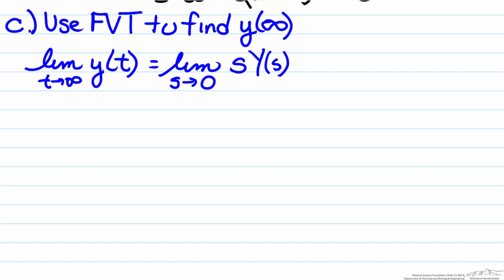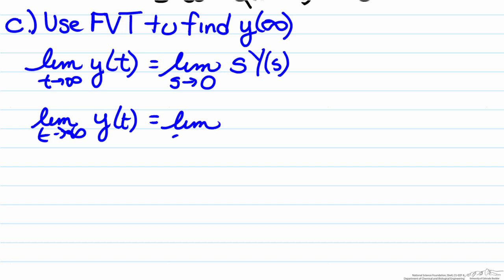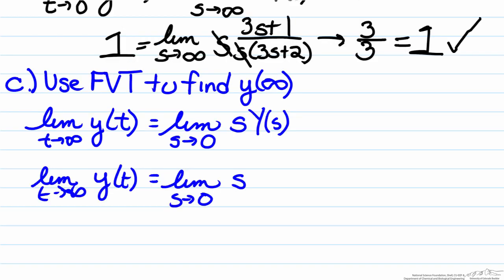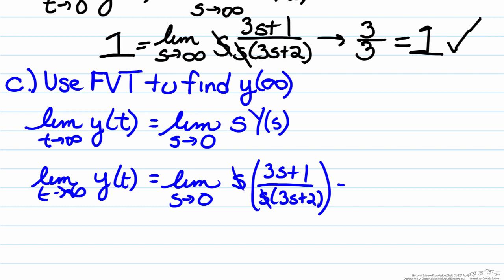Our limit as t goes to infinity of y of t equals the limit as s approaches zero of s times y of s, where y of s was 3s plus one divided by s times 3s plus two. The s's cancel, and if we substitute zero in we end up with one half. This shows that we would expect this differential equation to converge to one half.